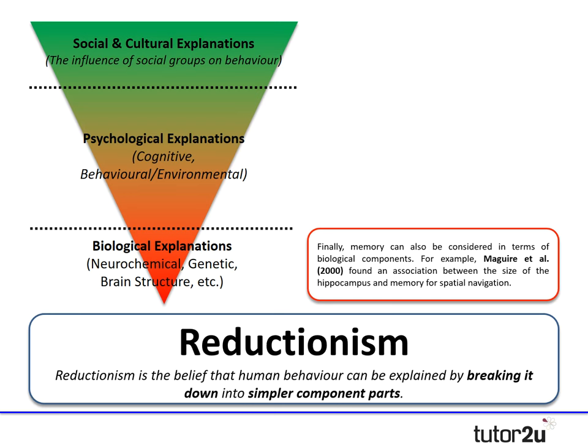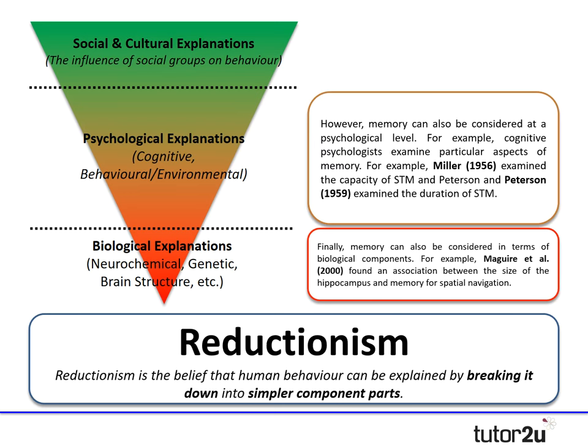So that would be a biological reductionist point of view. However, we could also consider memory at a psychological level. Cognitive psychologists in particular examine different aspects of memory. Miller looked at the capacity of short-term memory, and Peterson and Peterson examined the duration of short-term memory — these are all psychological explanations for understanding how our memory works.